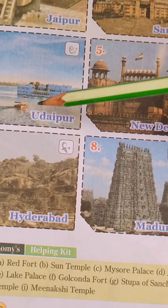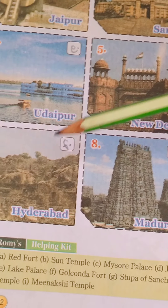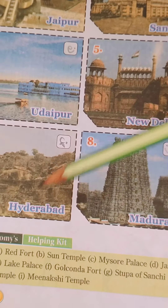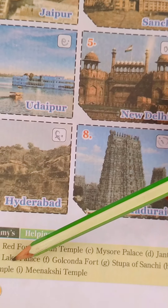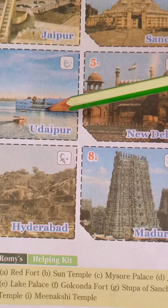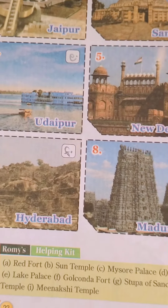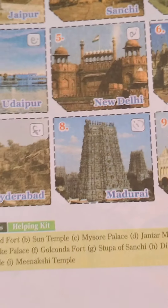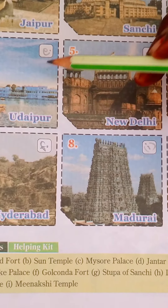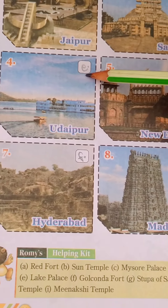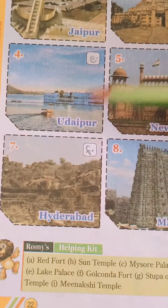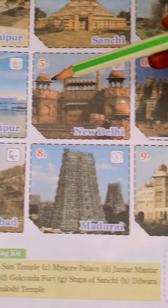Number 4, Udaipur. The answer is E. This is Lake Palace. You can see the place — this is the Lake Palace. So in number 4, we will write E, Lake Palace.